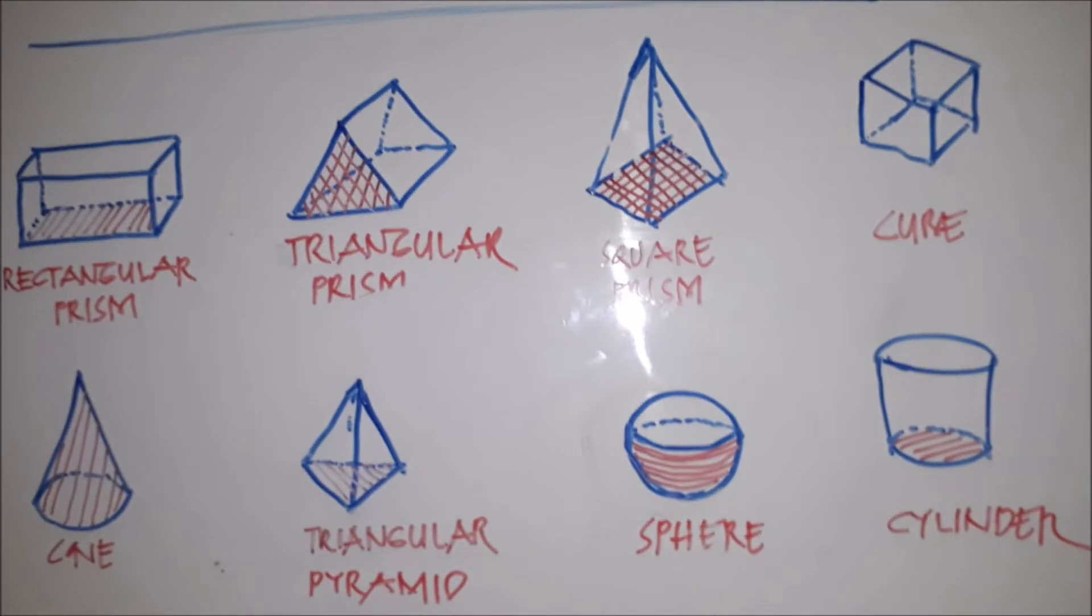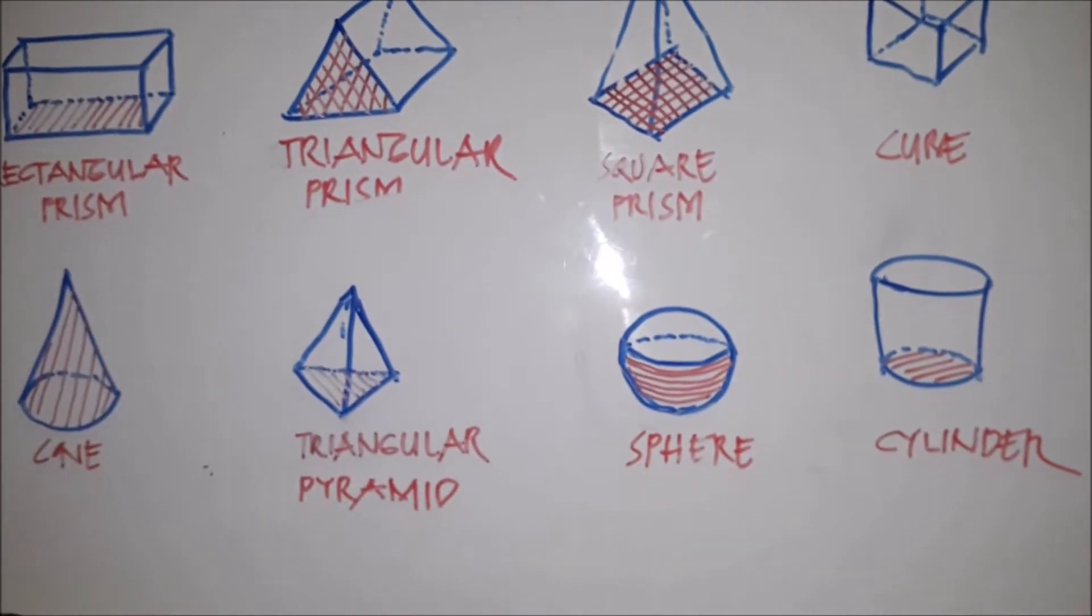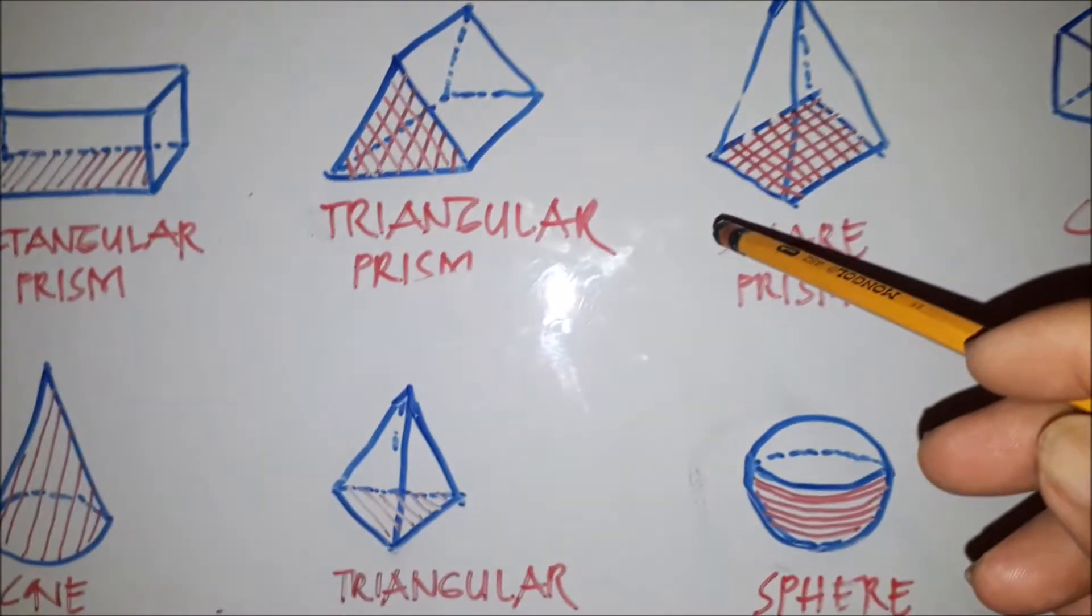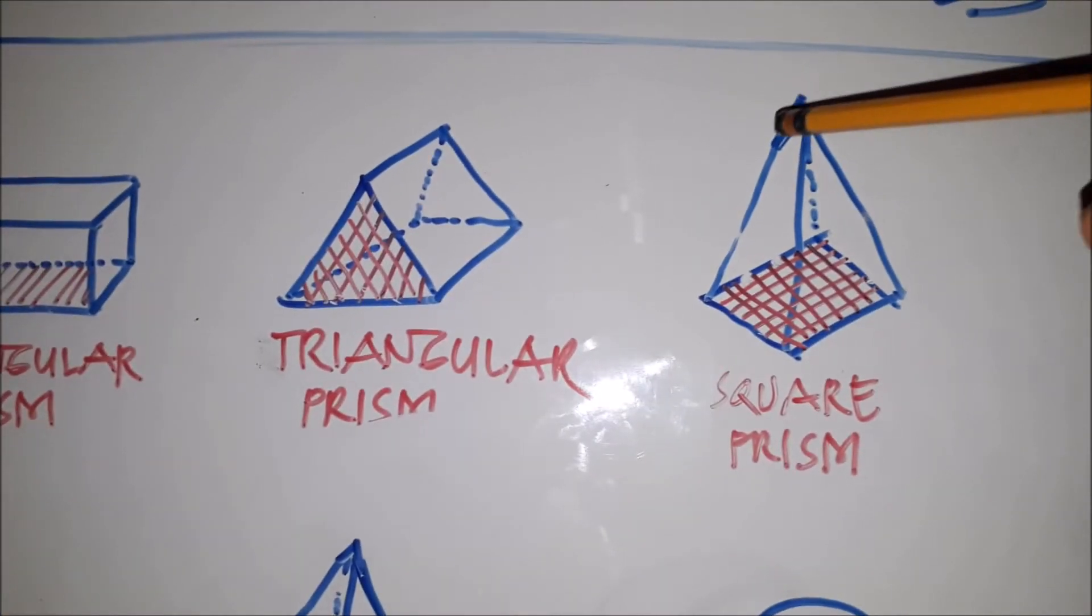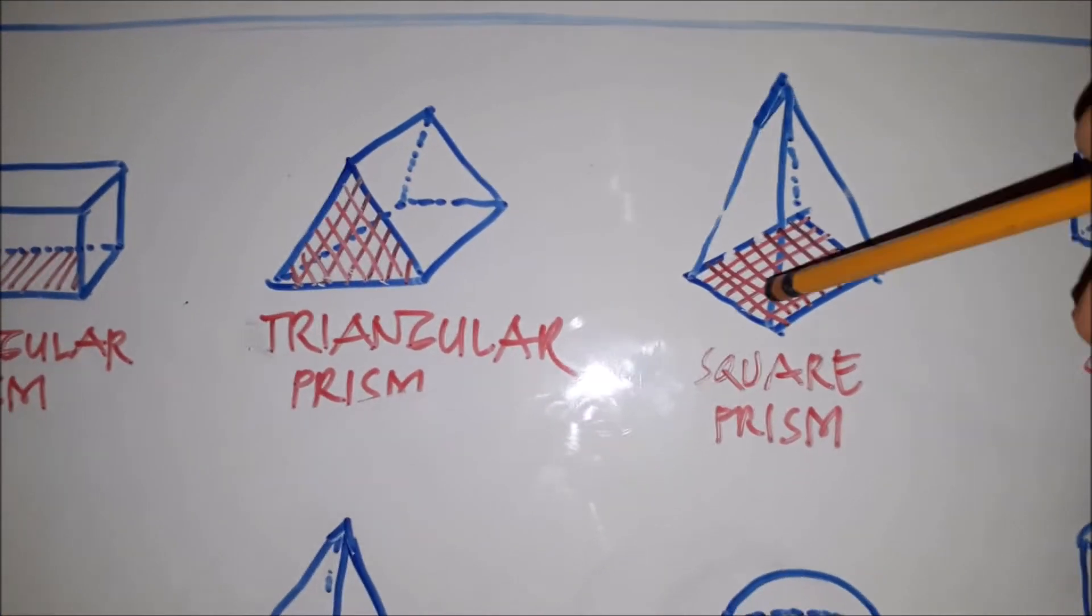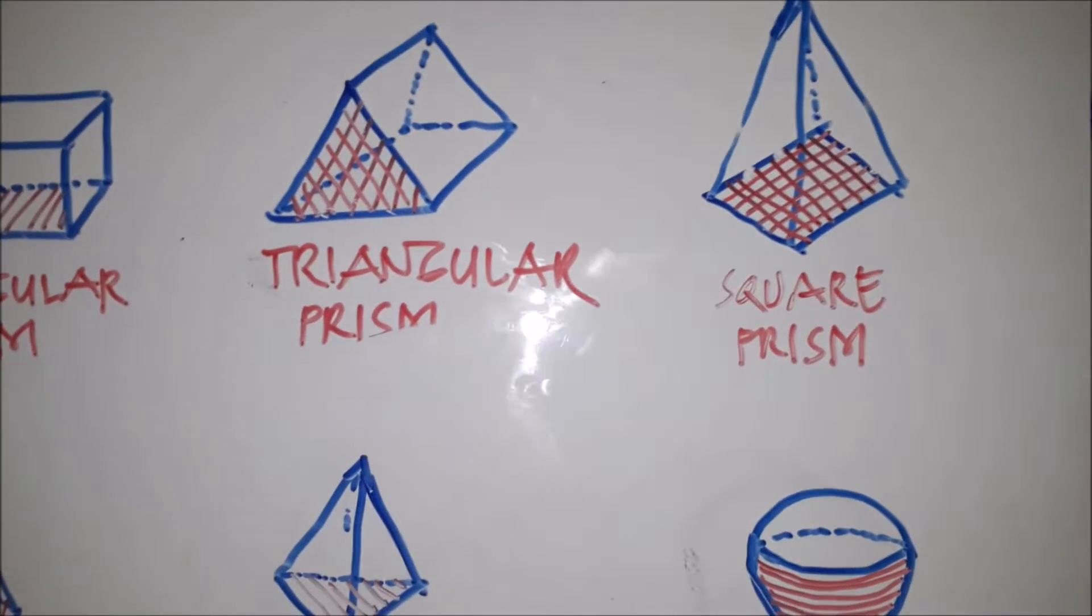The third one is the square prism. We have the square at the base, and then the end point meets its other at the top, so we call it square prism.